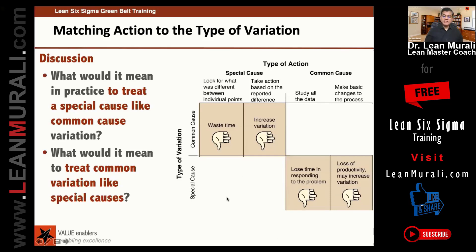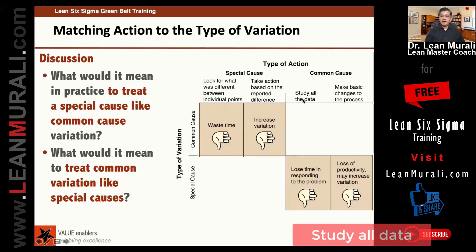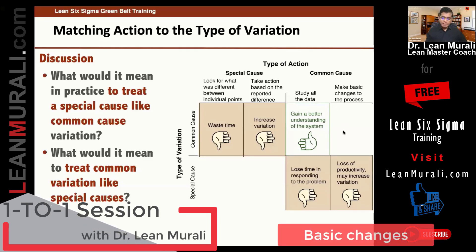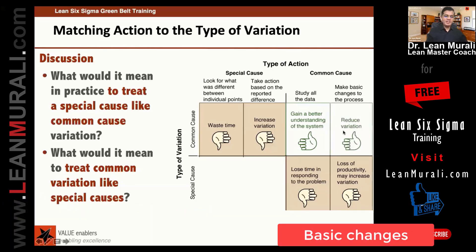Now let us see the correct approach. We treat special causes like special causes — we look for the difference between individual points. And we should treat common causes like common causes. So if it is a common cause, we should study all the data, and if we study all the data, we will get a better understanding of the system. If it is a common cause and you make basic changes to the process, you will definitely reduce variations.